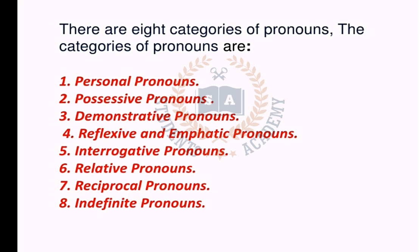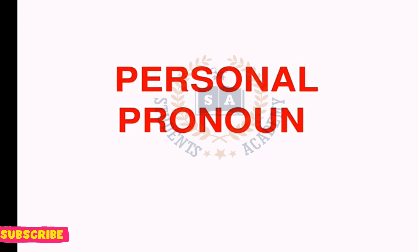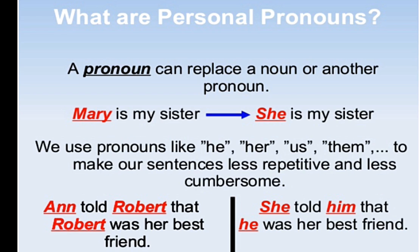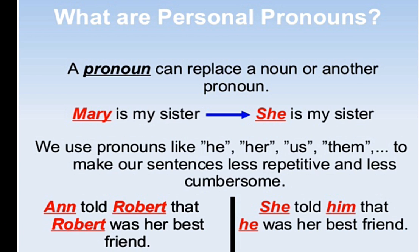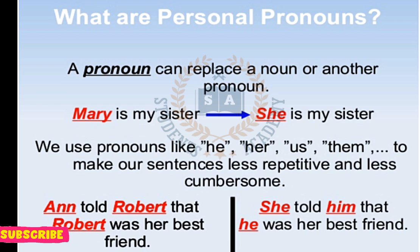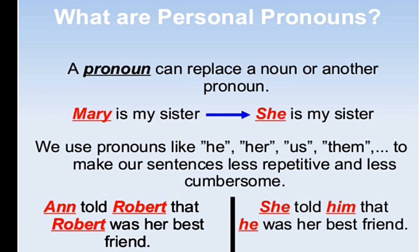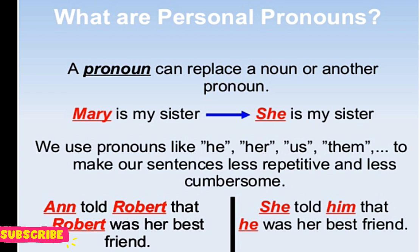سب سے پہلے ہمارے پاس آ جاتا ہے personal pronoun۔ Personal pronoun can replace a noun or another pronoun۔ جو personal pronoun ہوتا ہے وہ personally کسی بھی نام کو change کر لیتے ہیں، وہ relate کر رہی ہوتی ہے۔ Example: 'Mary is my sister' — اس کو ہم کہہ سکتے ہیں 'she is my sister'۔ بجائے Mary کا نام لینے کے، ہم pronoun use کر رہے ہیں۔ یہ جو 'she' ہے یہ Mary کا pronoun ہے۔